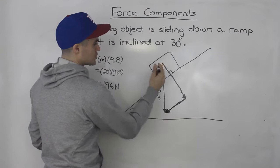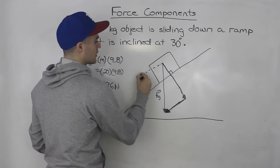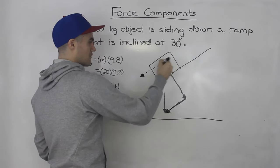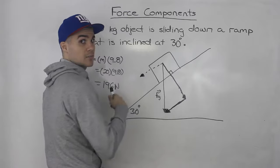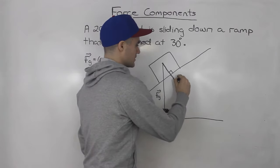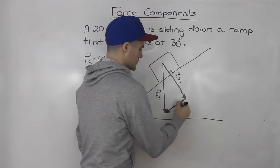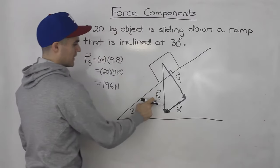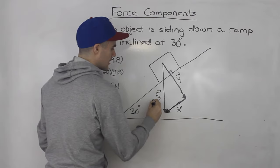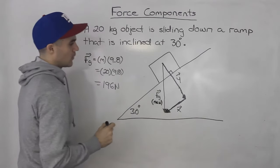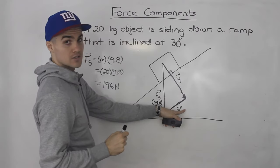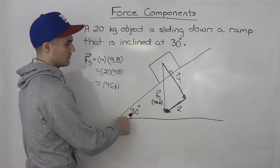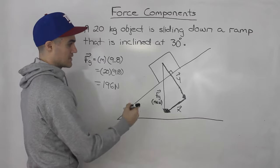If we take the force that's parallel to the ramp and shift it up, it would be right here, showing the parallel force on the sliding object. We can label these forces — call this force y (the perpendicular force) and this force x (the parallel force). We already have the force of gravity at 196 newtons. The question is: what are force y and force x? Can we find those? Yes, because we have the angle at which the ramp is inclined.